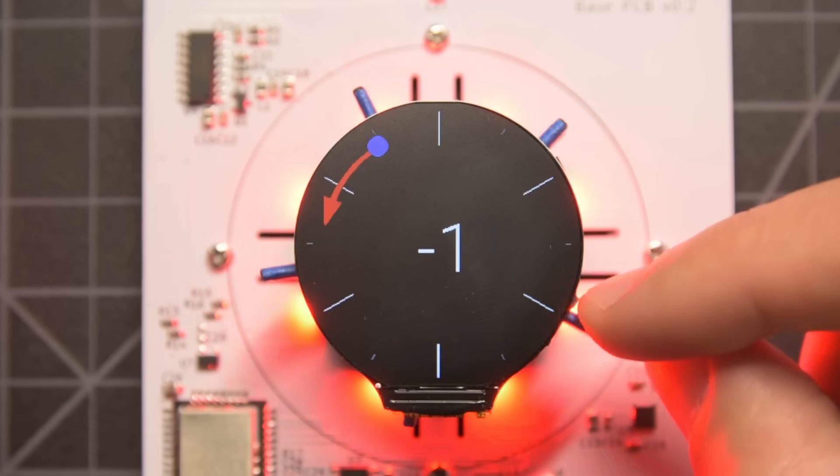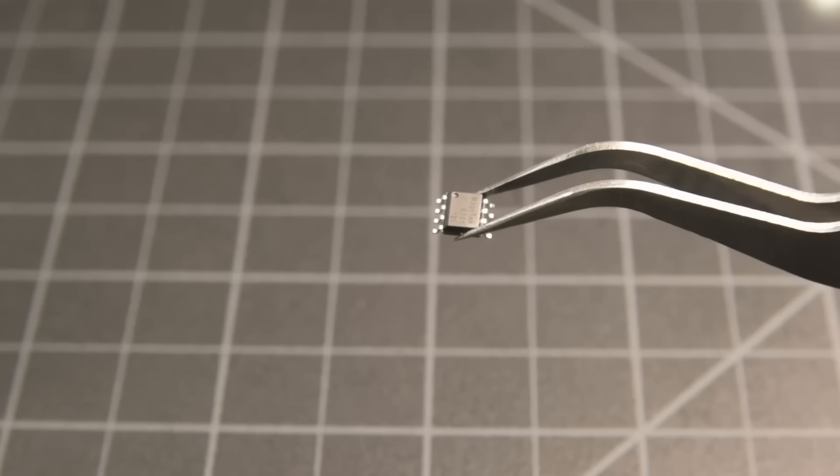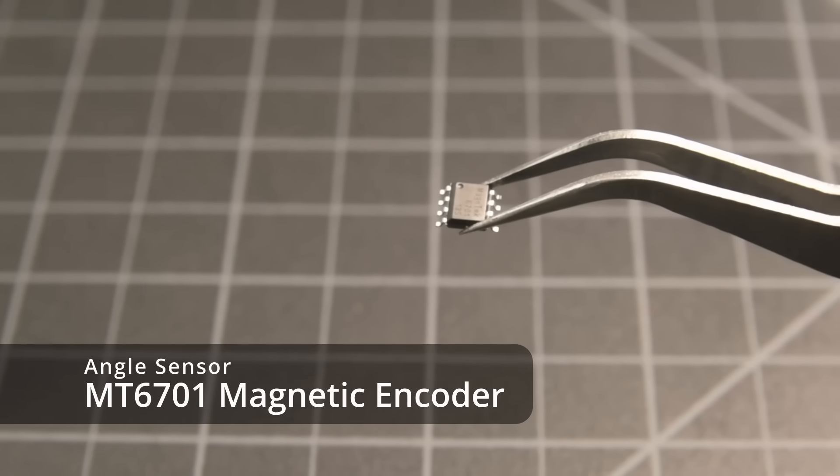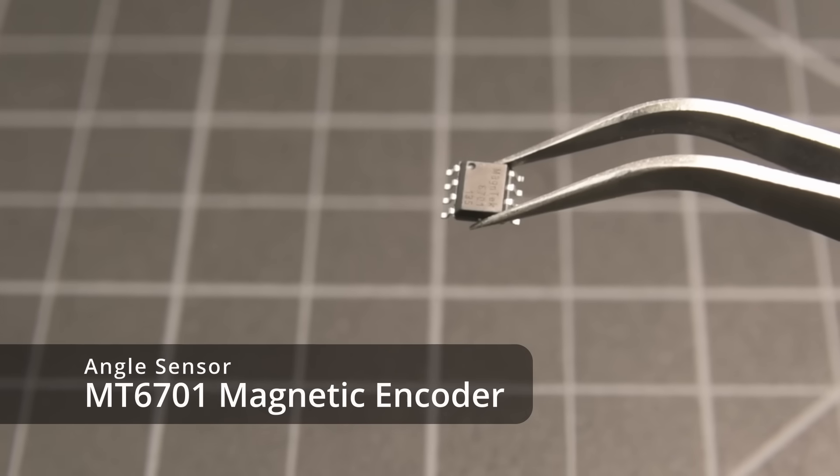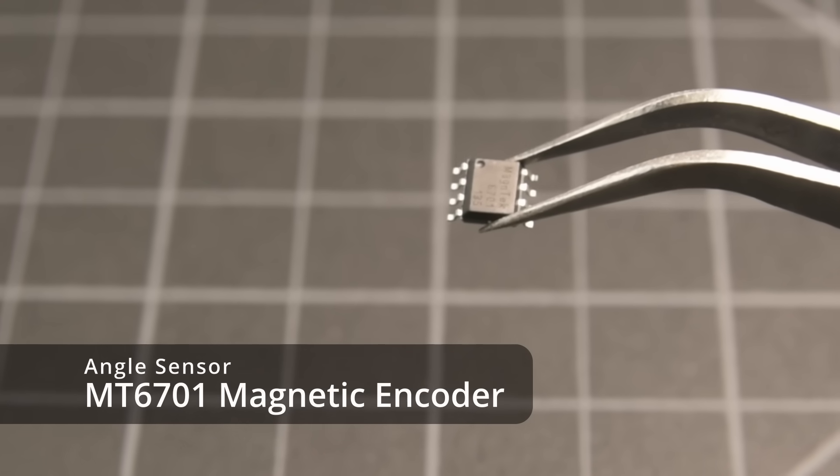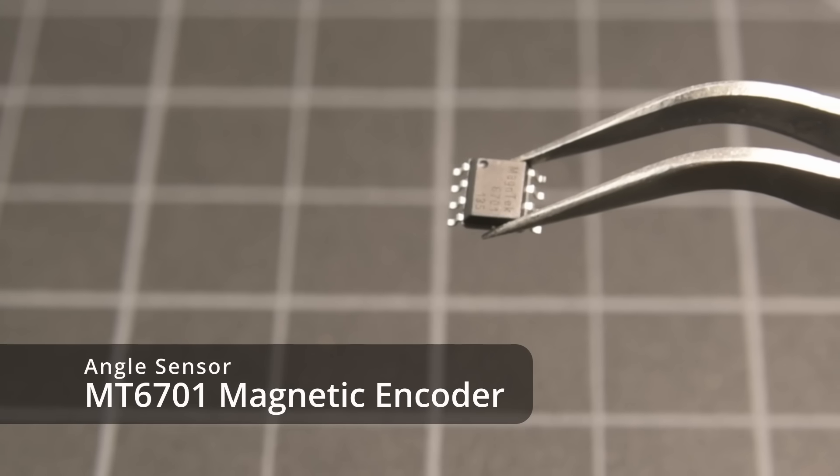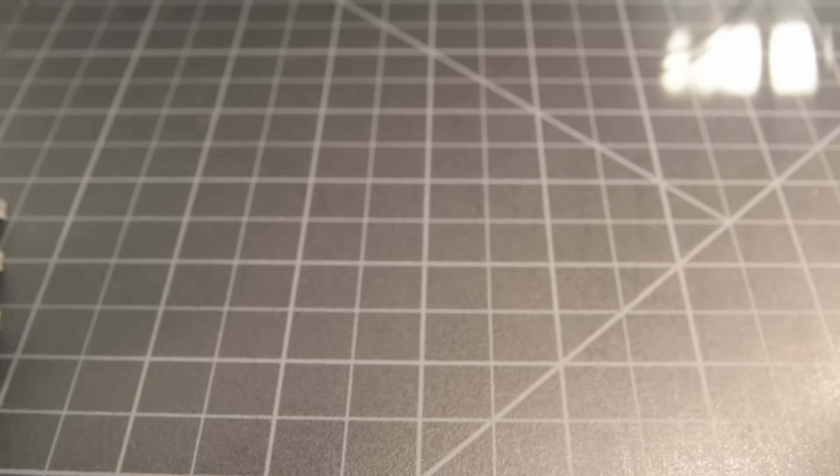So to make those virtual detents work, we clearly need to know the angle of the knob at all times. To do that, I'm using this MT6701 magnetic encoder chip. It's basically a high-resolution digital compass that can measure the angle of the magnetic field. Think of it kind of like this.